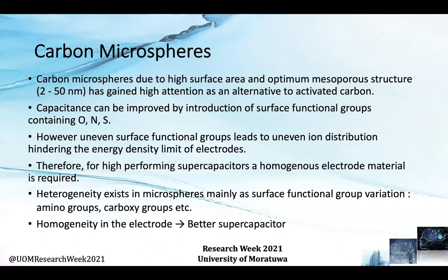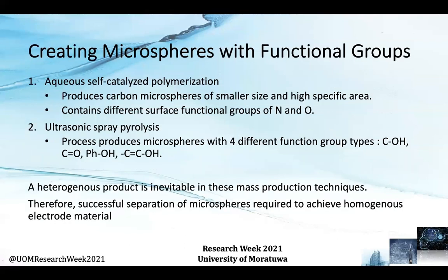However, uneven surface functional groups lead to uneven ion distribution, hindering the energy density limit of electrodes. Therefore, for high performing supercapacitors, a homogeneous electrode material is required where a consistent surface functional group is available within a single electrode. However, when considering mass production of carbon microspheres with surface functional groups, a heterogeneous product is inevitable. For example, a co-self-catalyzed polymerization procedure produces microspheres with different surface functional groups of nitrogen and oxygen, and an ultrasonic spray pyrolysis produces microspheres with four different functional groups — carbon, hydrogen, oxygen, and phosphorus. Thus, there is a necessity for separation of carbon microspheres with similar functional groups to ensure homogeneity of the electrodes.